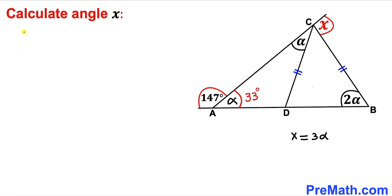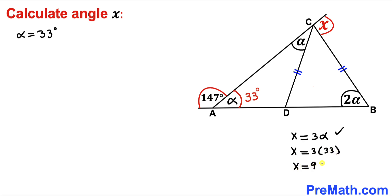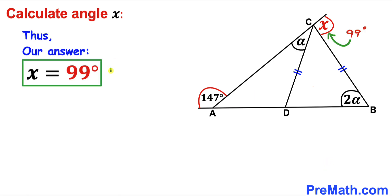So our angle alpha turns out to be 33 degrees. We know that x equals 3 alpha, so therefore x is going to be 3 times 33 degrees, and x turns out to be simply 99 degrees.